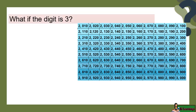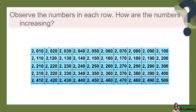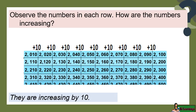What if the digit is 3? We read it as 3,000. Observe the numbers in each row. How are the numbers increasing? They are increasing by 10.